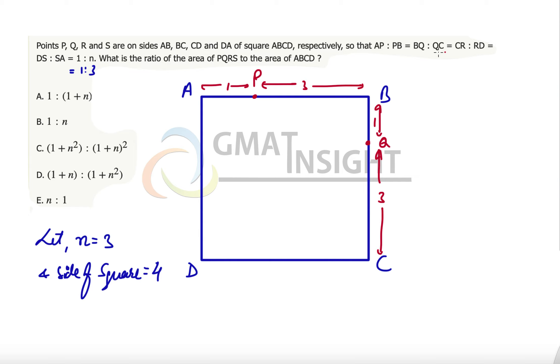4. And BQ:QC equals CR:RD, so let's take point R somewhere at this place. The distance of R from C is 1, the distance of R from D is 3, and the fourth point